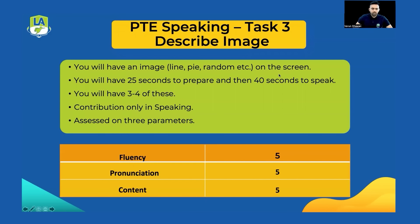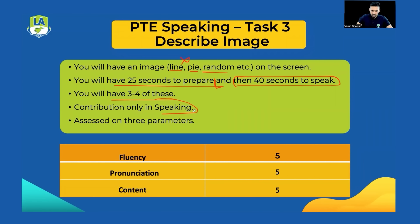For task number three, Describe Image: you'll get an image on your screen. The image can be anything — a line graph, a pie chart, a histogram, or a random image. You'll have 25 seconds to prepare and then 40 seconds to speak about the image. You'll have three to four describe image tasks in your test, and this task only gives you points in speaking — not in reading, not in listening. It's an easy yet scoring task.